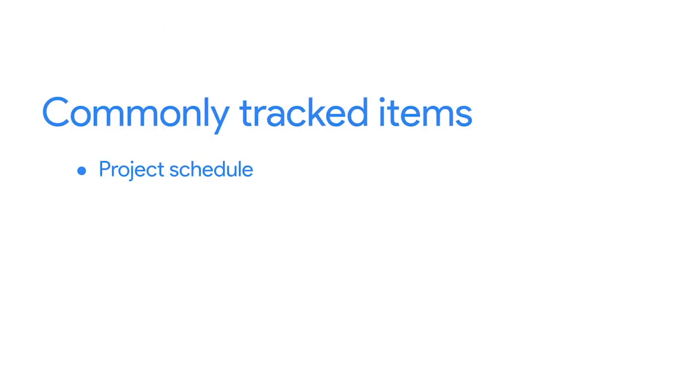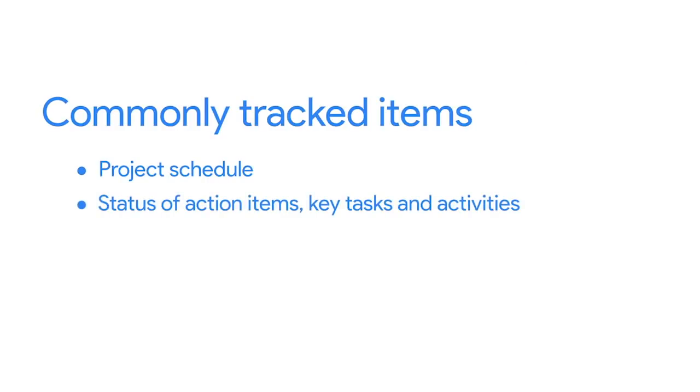We've discussed that tracking monitors the progress of project activities. First, you should always track the project schedule. This is made up of tasks and activities that ensure that the project is effectively heading toward its completion date. After all, your ultimate goal is to complete your deliverables on time. Equally important is tracking the status of action items, key tasks, and activities to ensure that work is actually getting done. Tracking tasks also helps to track your team's progress toward milestones.